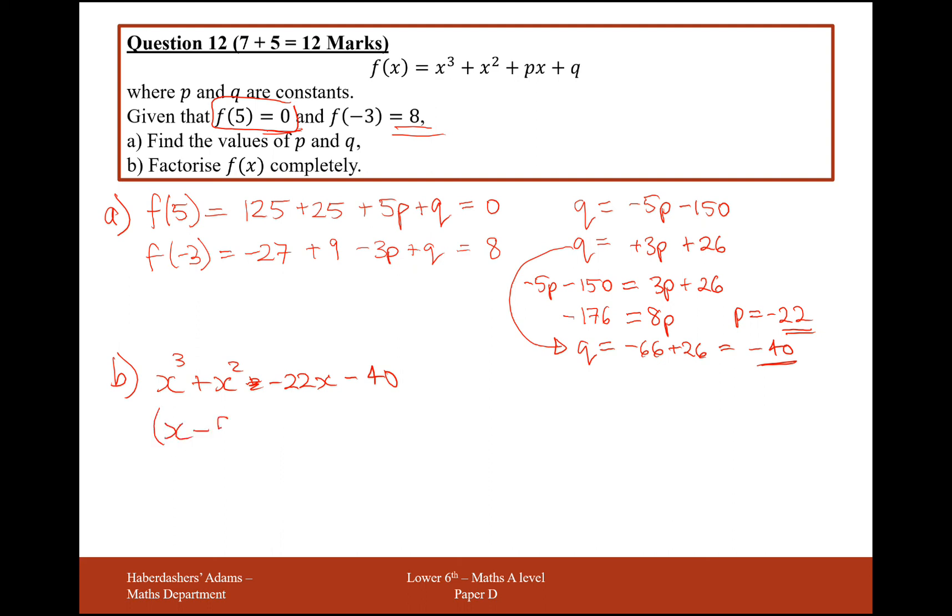So x minus 5, and then we need something in this bracket here. So I'm going to use the grid method for this. So I'll set out my grid, and it's going to be x and a minus 5 down here. All these terms need to fit inside these boxes here, and my answer is going to appear on the top here.